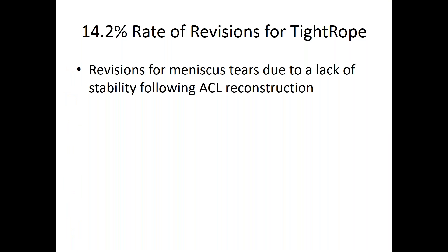Revision rates and re-tear rates are important. In this paper, the tightrope revision rate was 14.2% — these were revisions for meniscus tears due to lack of stability following ACL reconstruction. If you don't have a good, stable ACL reconstruction, it can translate into other problems down the line, and in this series those problems were subsequent meniscus tears.